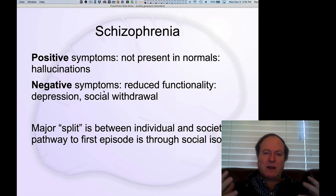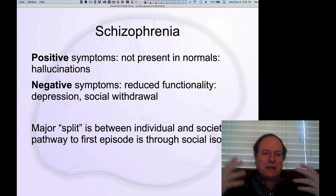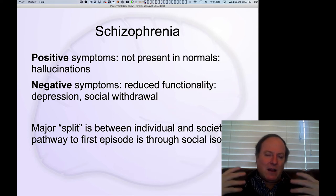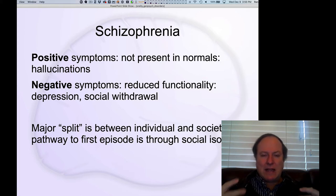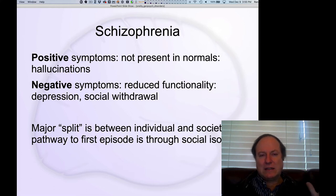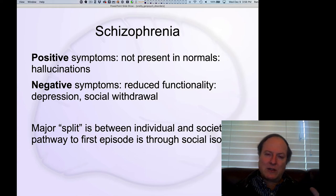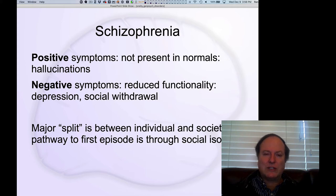Schizophrenia is so named because it's sort of split. People originally thought of it as a split personality. But really, it's more of a division — a split between the individual and society. It turns out it's much more tied to social isolation, social withdrawal, and the creation of a sort of alternative reality, a delusional internal state, a fantasy world.